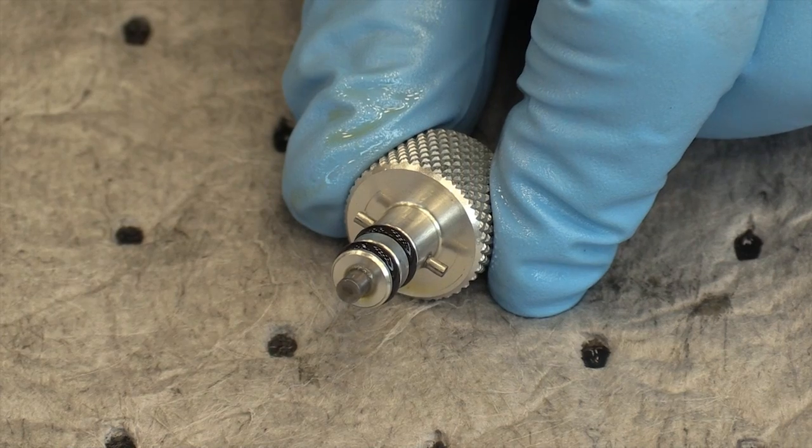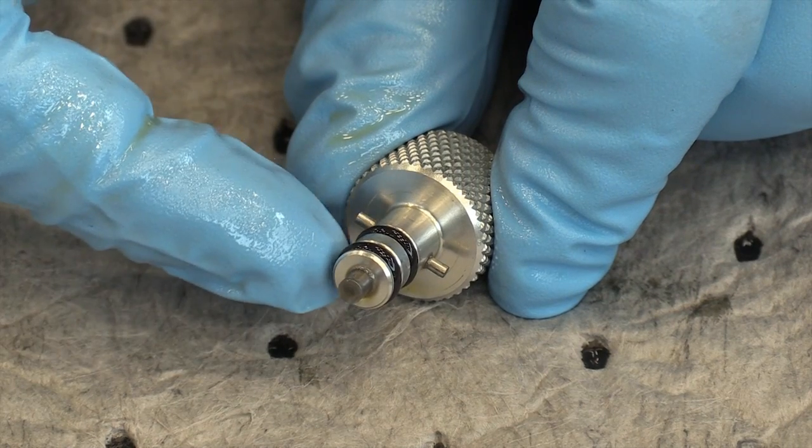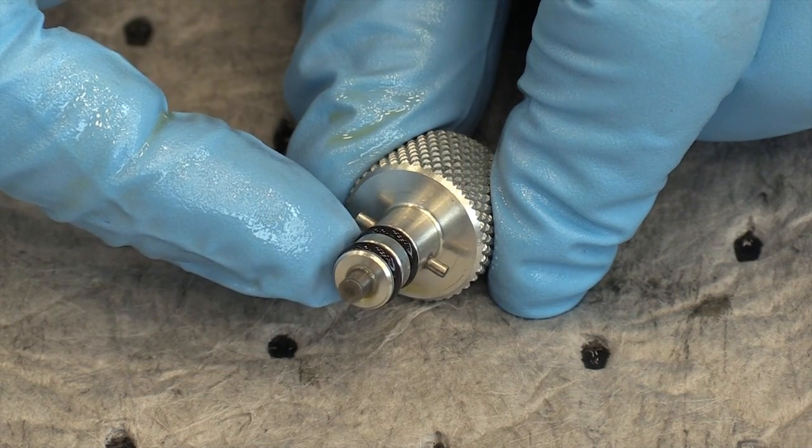Once you have the magnetic plug removed, you need to go ahead and remove and discard the two O-rings on the magnetic plug.